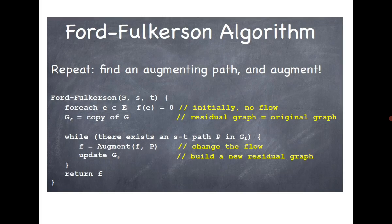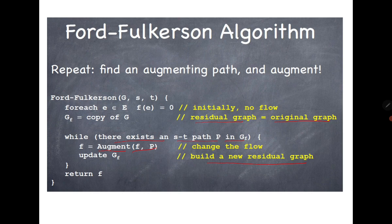The Ford-Fulkerson algorithm suggests that initially the residual graph is equal to the original graph. You look for an S-T path in the residual graph, identify the minimum capacity in that path, augment the flow by this minimum capacity, then build a new residual graph. Repeat until there does not exist an S-T path in the residual graph.